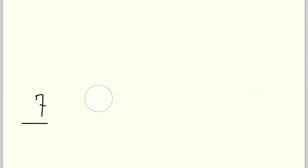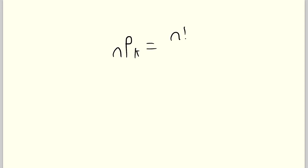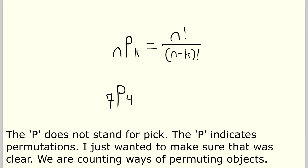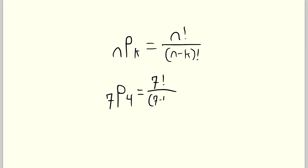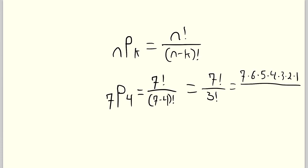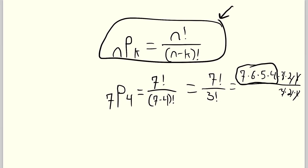Now the cool thing is that there is a formula to help us in this kind of situation. If we have n objects and we want to know how many ways we can select k of those n objects if order matters, the number of ways is equal to n factorial divided by (n minus k) factorial. The situation we had was seven objects picking four of them in some order. Using the formula, it should be 7 factorial divided by (7 minus 4) factorial, which equals 7 factorial divided by 3 factorial. You can see the three, two, and one cancel out, leaving us with 7 × 6 × 5 × 4. So the formula gives us the result we expect.